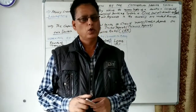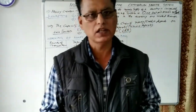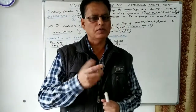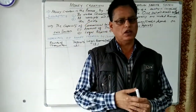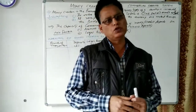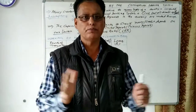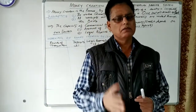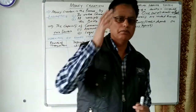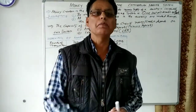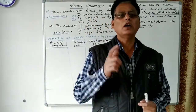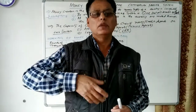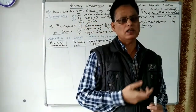Welcome back to class. Today we'll discuss a new topic: money creation by the commercial banking system. A commercial bank is an institution which accepts deposits from the public, grants loans, and makes investments in order to earn profits. Just like other business houses, the banking system is also a business entity, and its main aim is to earn more and more profit. The question arises: how does the bank earn money, and how is credit creation done by commercial banks?